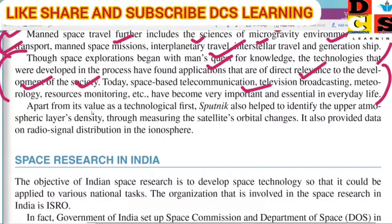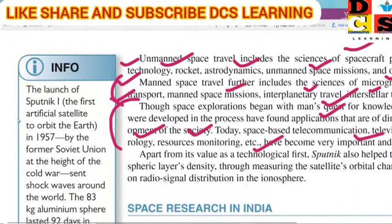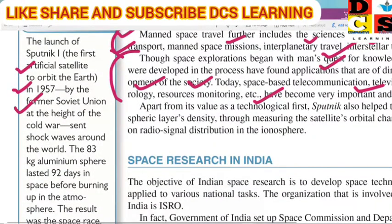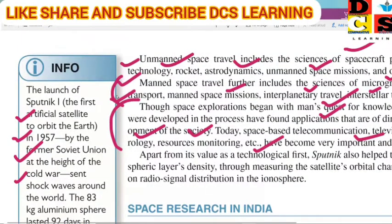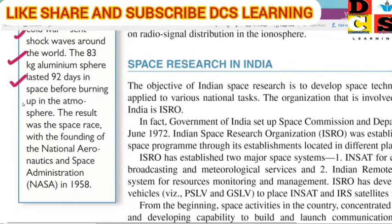Apart from its technological value, Sputnik — the first artificial satellite to orbit the Earth — was launched in 1957 by the Soviet Union, at the height of the Cold War. The 83 kg aluminium sphere lasted 92 days before burning up in the atmosphere. This resulted in the space race and the founding of NASA.